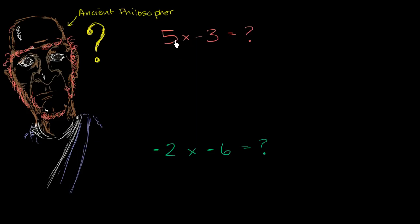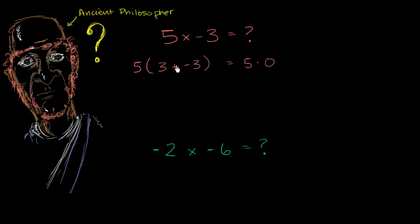To make this consistent with the rest of the mathematics that you know, you go into a little bit of a thought experiment. What should 5 times the quantity 3 plus negative 3 be? Well, you know that negative 3 is the opposite of 3 — if you add 3 to negative 3 you get 0. So this is going to be equal to 5 times 0, and anything times 0 is going to be 0. So this expression right over here should be 0.